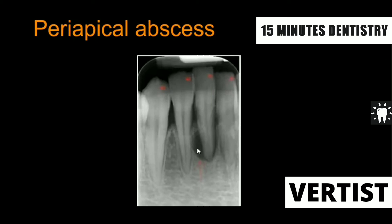You can see this radiolucency at that point. What you will see is the loss of lamina dura, widening of the periodontal ligament space, and a radiolucency of irregular shape. There will be an irregular-shaped radiolucency at the apex of the tooth — that is suggestive of periapical abscess formation. The size and shape will be varied, depending on the virulence and immunity of the individual.